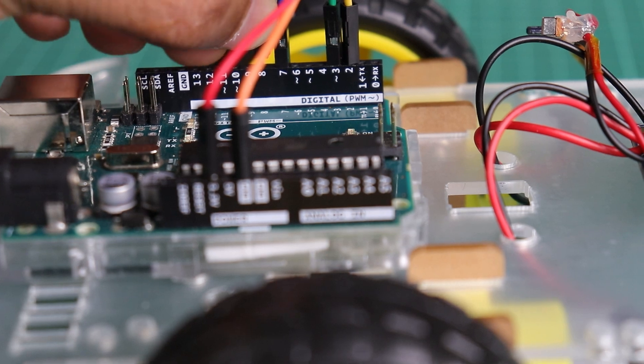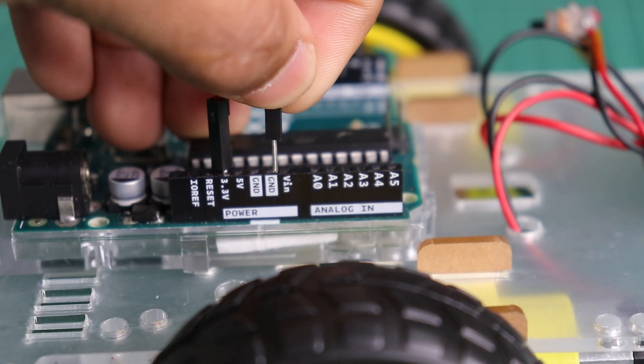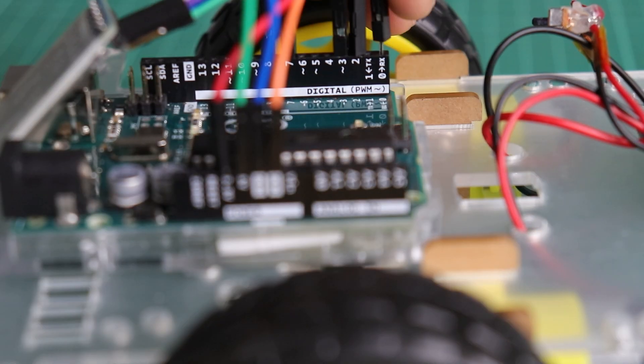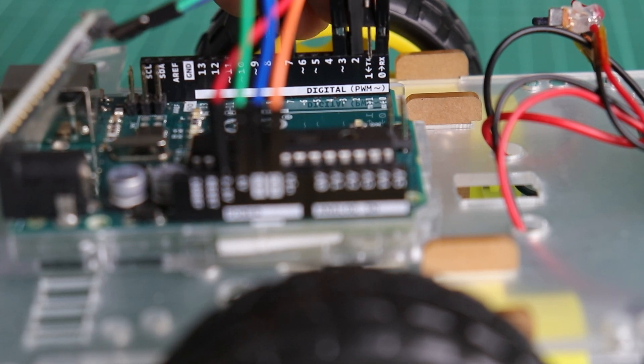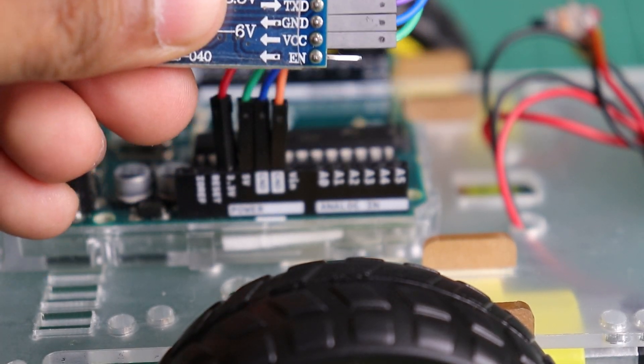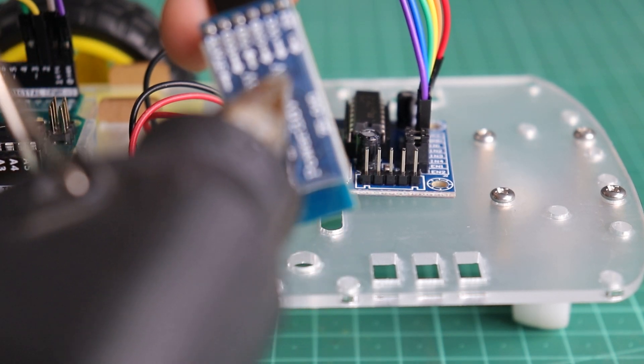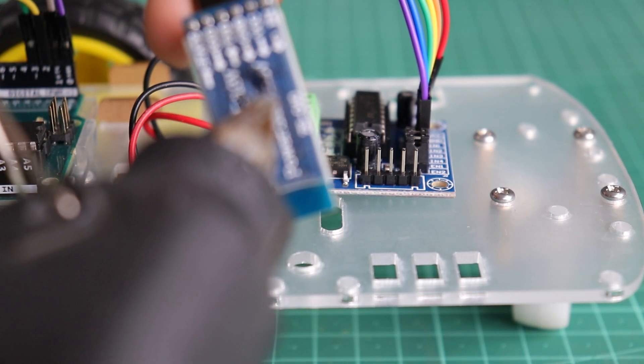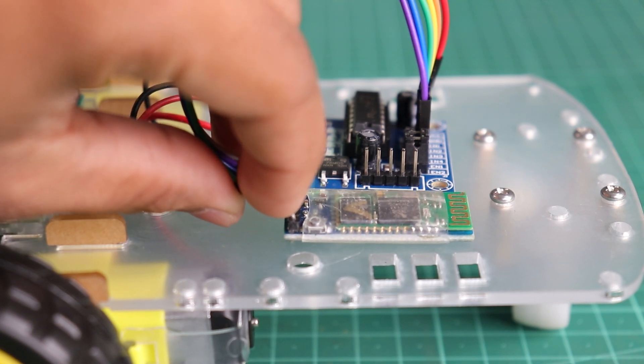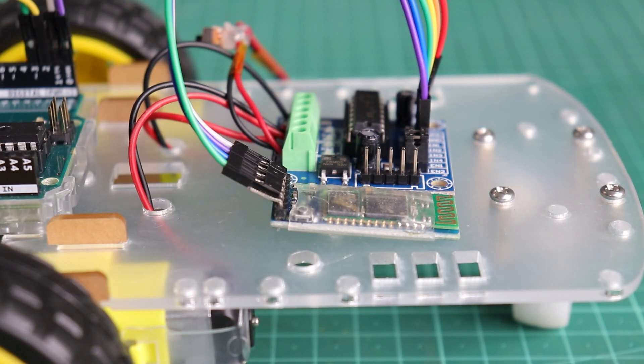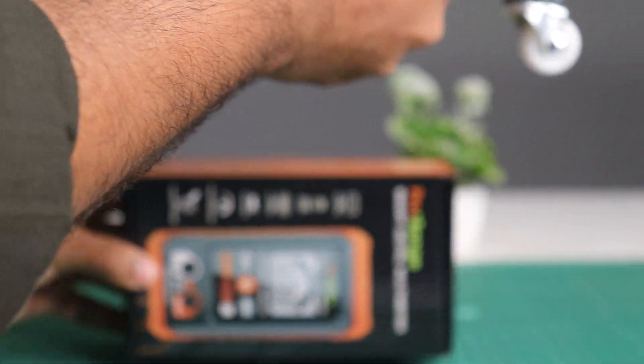Let's take HC05 Bluetooth module and connect it to Arduino using UART connectivity. Now fix it on chassis with hot glue and connection is complete.